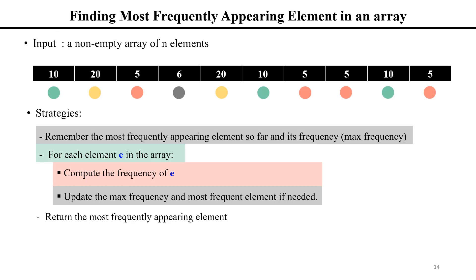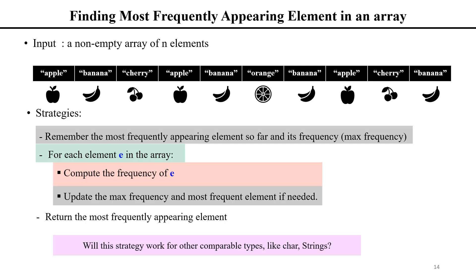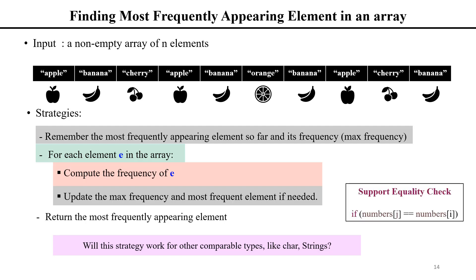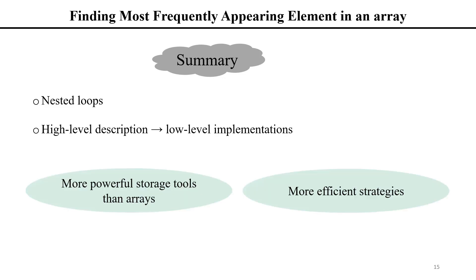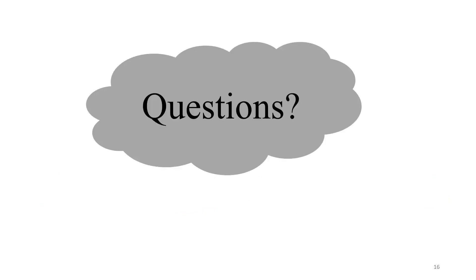So far we've dealt with numbers, but what if we have other types — will this strategy work for characters and strings? It should, as long as we can check the equality of two elements of that type. I encourage you to try implementing those other types. In summary, today we learned how to use nested loops and practiced implementing a high-level strategy in Java. In the future, after learning more powerful storage tools than arrays, we can develop more efficient strategies that only need to go through the input array once instead of n times. Leave any questions in the comments.